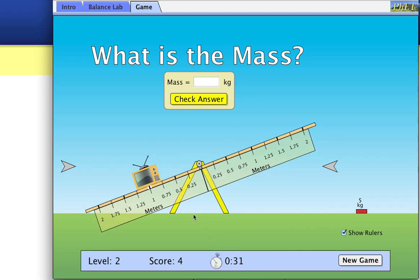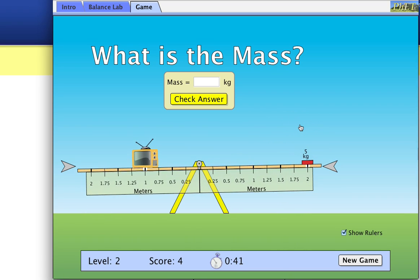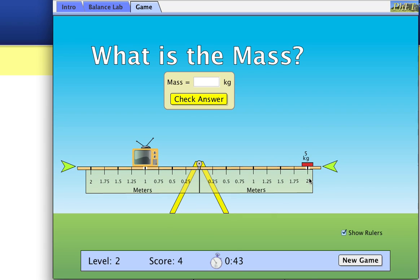Okay, now they want me to figure out the mass of this TV. So I use this five kilogram brick. I try placing it at different locations. I see that it balances when I put the five kilogram brick at the two meter mark. That's twice the distance, so the TV has to have twice the mass. So that should be ten kilograms.